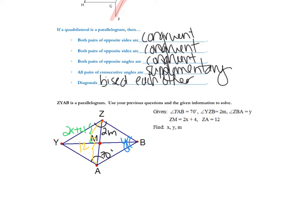What do we know about parallelograms? Opposite angles are congruent. So 2M equals 70, which means M equals 35.